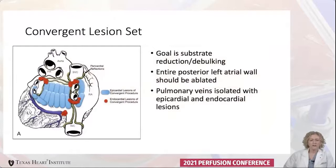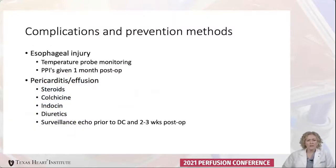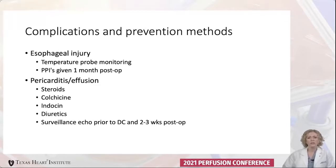The convergent lesion set shows the epicardial ablations in blue and the endocardial ablations in red. The goal is reducing the substrate that causes AFib — entire coverage of the left posterior atrial wall as well as isolation of the pulmonary veins. A key complication to watch for is esophageal injury; we use a temperature probe to monitor esophageal temperature at all times. We also watch for pericarditis or effusions post-op, controlled with steroids and anti-inflammatories like colchicine and indomethacin.